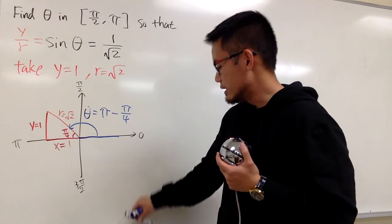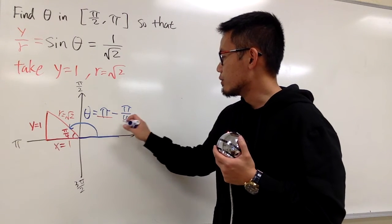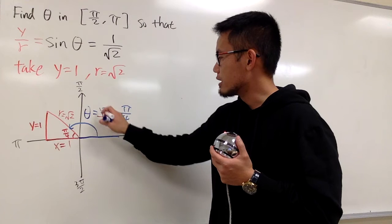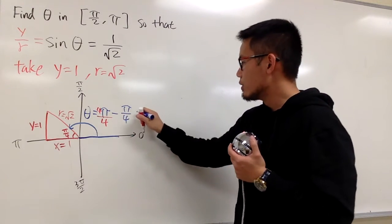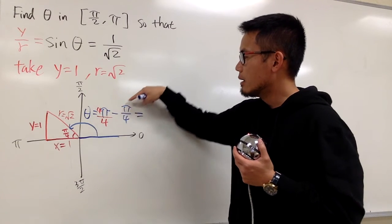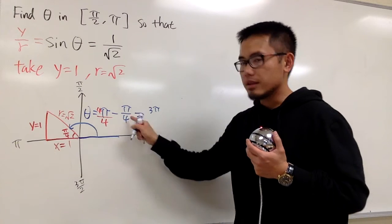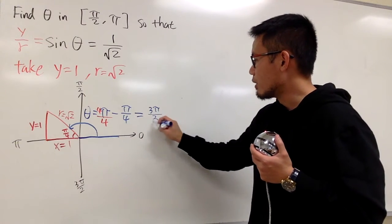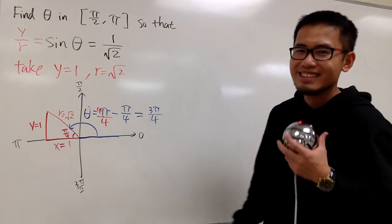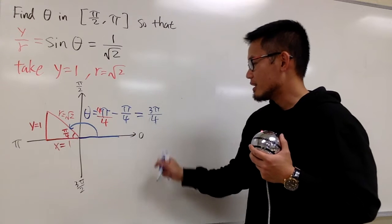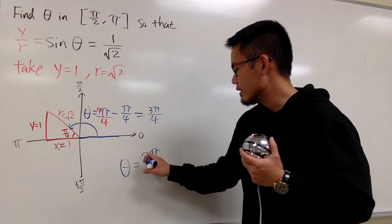And if you do it this way, you will have to get the common denominator, because pi is the same as 4 pi over 4. So I multiply 4 on the bottom and 4 on the top. And now you can see that 4 pi minus 1 pi, which is 3 pi, and the denominator stays the same. So we have 3 pi over 4. Theta is equal to 3 pi over 4, and this is the answer for it.